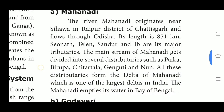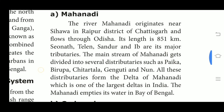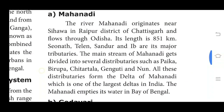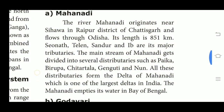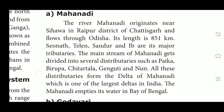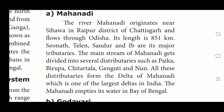The main stream of Mahanadi gets divided into several distributaries such as Paika, Pirupa, Chitratala, Genguti and Nun. All these distributaries form the delta of Mahanadi, which is one of the largest deltas in India. The Mahanadi empties its water into the Bay of Bengal.